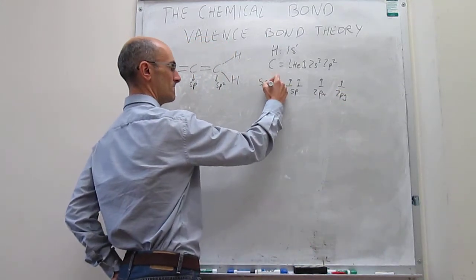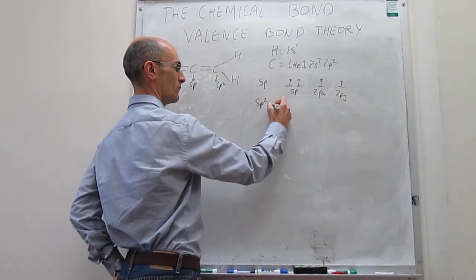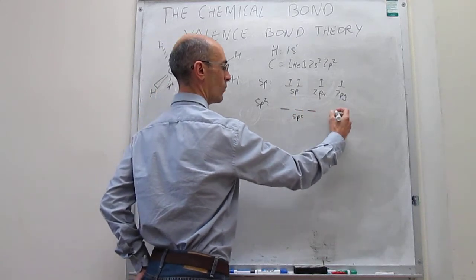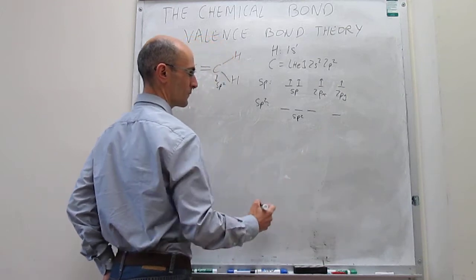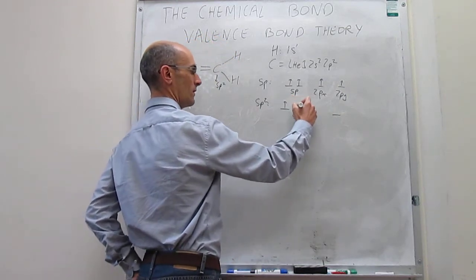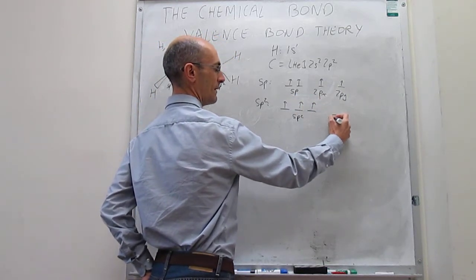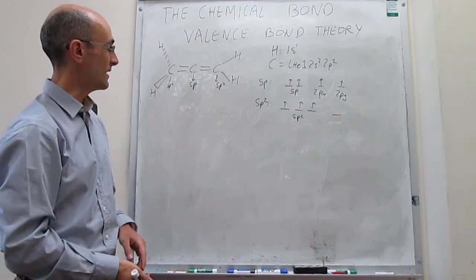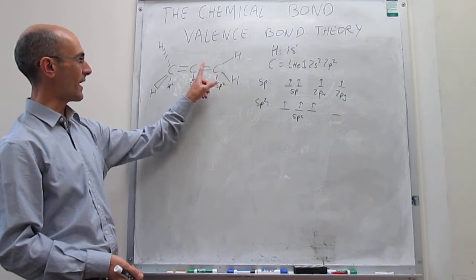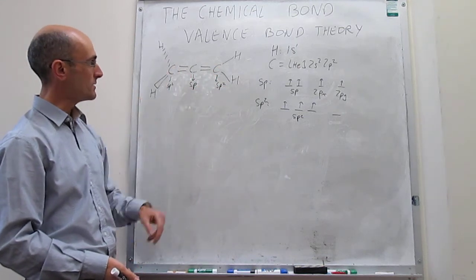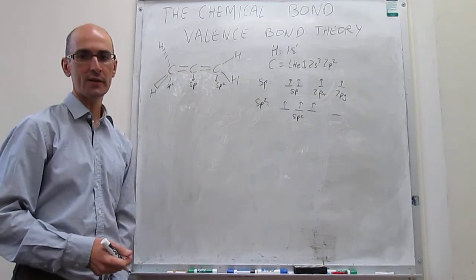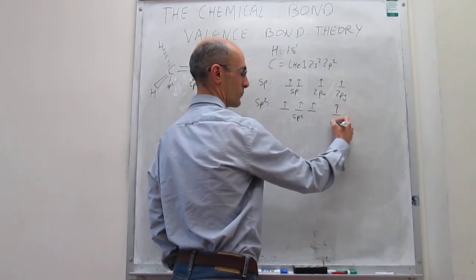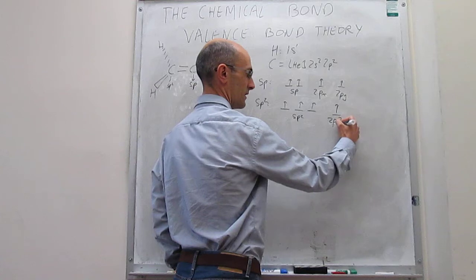For sp2 hybridization, you're going to have three sp2 hybrid orbitals and then one unhybridized orbital. The three sp2 orbitals each have one electron. I'm not going to label the unhybridized orbital yet, because it turns out to be different for each of the two terminal atoms — it could be either the 2px or 2py. We'll see exactly how this turns out in a moment, so I'll write it as '2p?'.